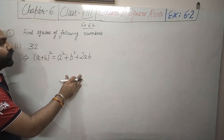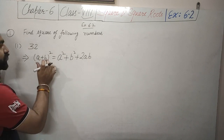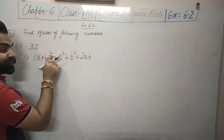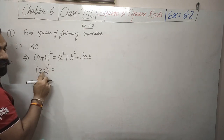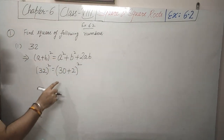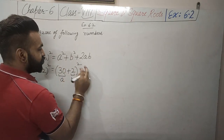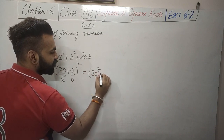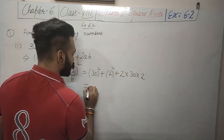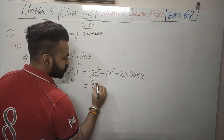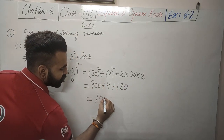Now we will start exercise 6.2. Question 1: find the square of the following numbers. First number is 32. Using the identity (a + b)² = a² + b² + 2ab, we split 32 as 30 plus 2. Here a is 30 and b is 2. So 30 squared plus 2 squared plus 2 into 30 into 2 equals 900 plus 4 plus 120 equals 1024.